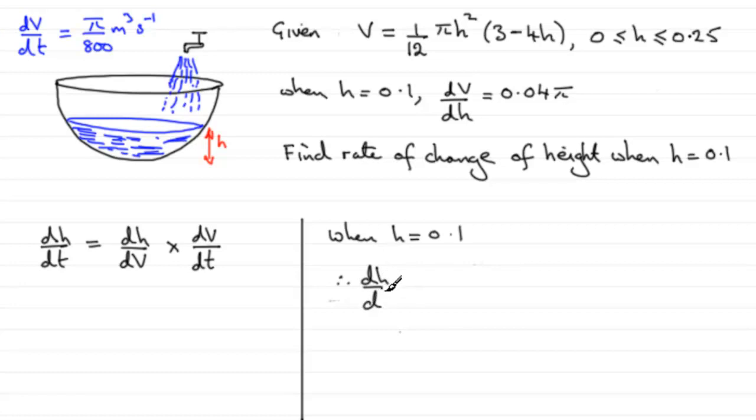therefore dh by dt is going to equal dh by dV. Well we've got dV by dh, so we just need to reciprocate this. So that's going to be 1 divided by 0.04π. And that's multiplied by dV by dt when h is 0.1. And we know that whatever h is, this is coming in at a constant rate. So that's always going to be π over 800.